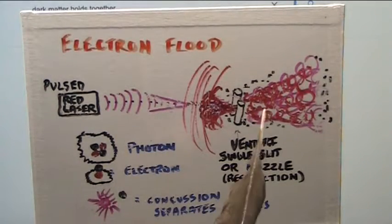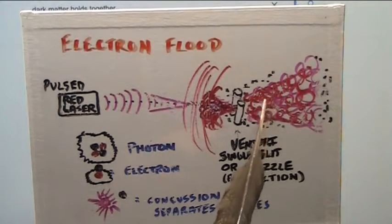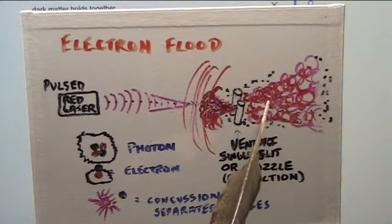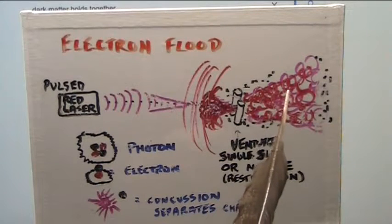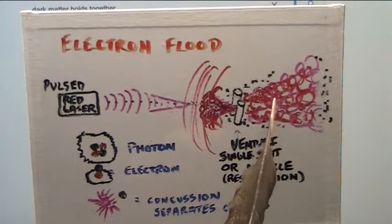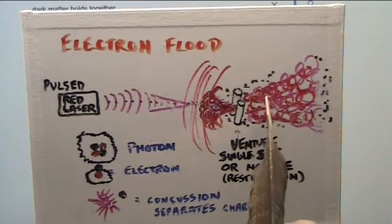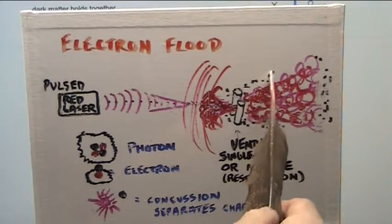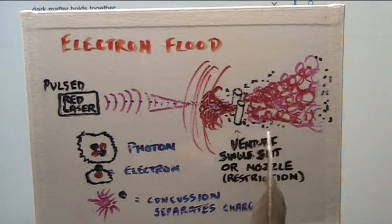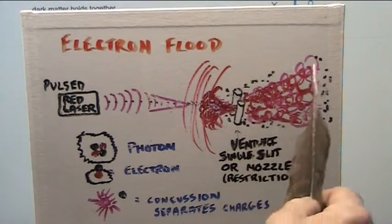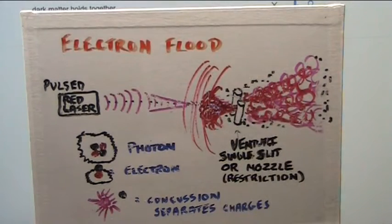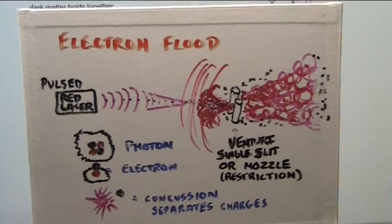This is the concussive energetic matter. They call it these electron showers, and these are the muons that go around and do not interact.